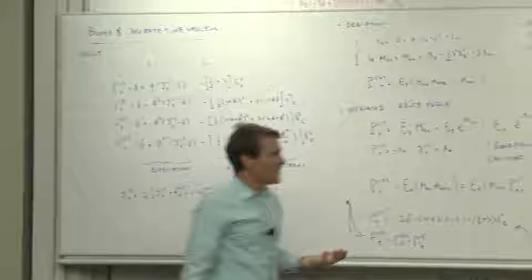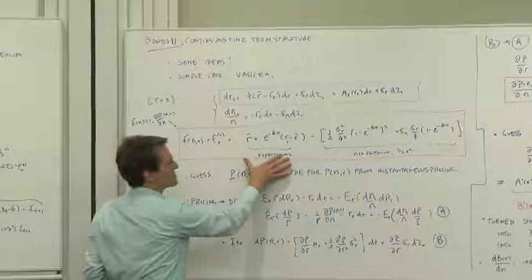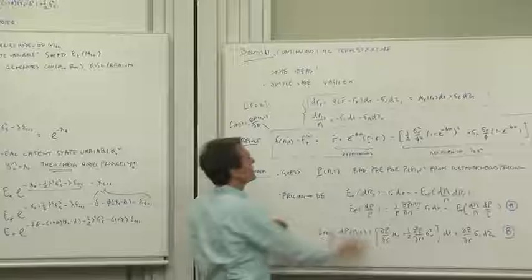Then we went in the discrete time model, we added the discrete time risk premiums. When we went to continuous time, we got a model that looks quite similar. We had the expectations term and the risk premiums term.